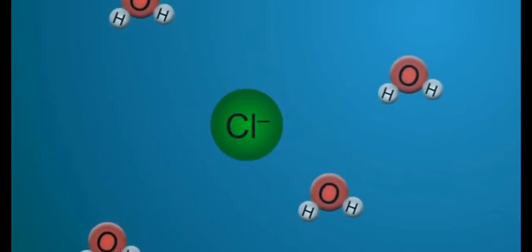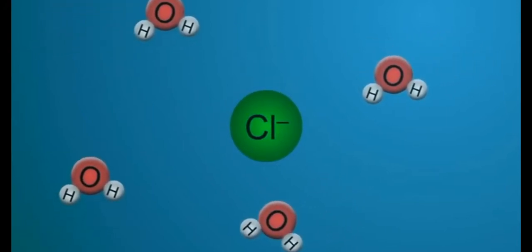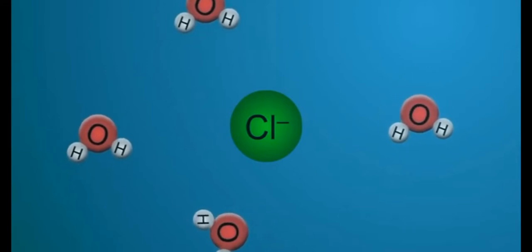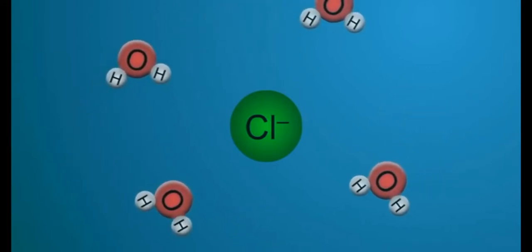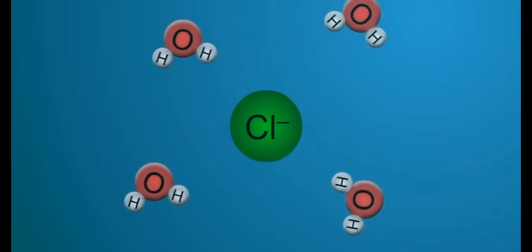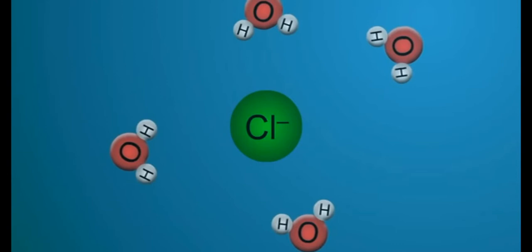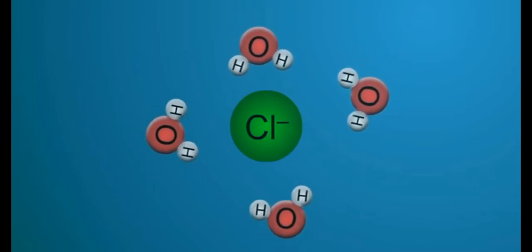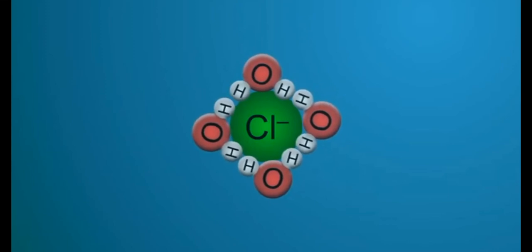the chloride ions, which are negatively charged, are attracted by the positively charged end of the water molecule. Chloride ions get surrounded by water molecules in a manner such that the negatively charged end points towards the chloride ions. In this way, ions interact with poles of a dipolar molecule.